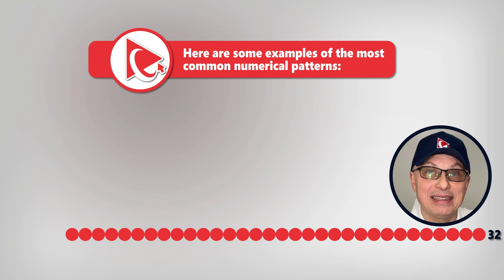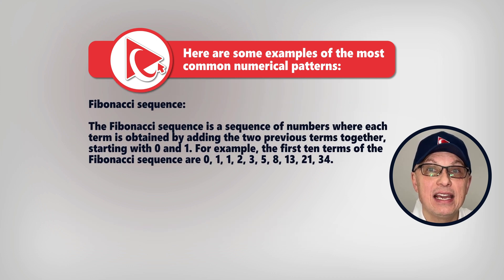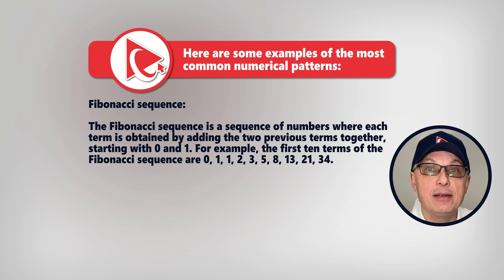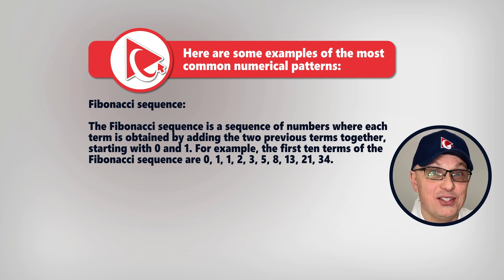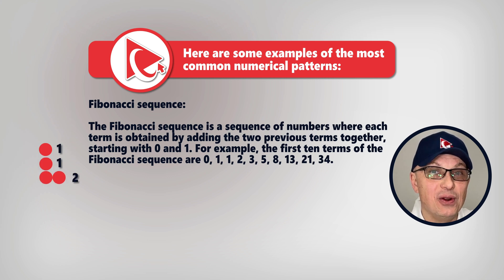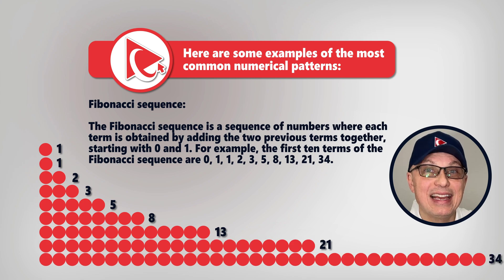And last but not least on my list is Fibonacci sequence. Fibonacci sequence is a sequence of numbers where each term is obtained by adding the two previous terms together, starting with 0. For example, the first 10 terms in the Fibonacci sequence would be 0, 1, 1, 2, 3, 5, 8, 13, 21, and 34.